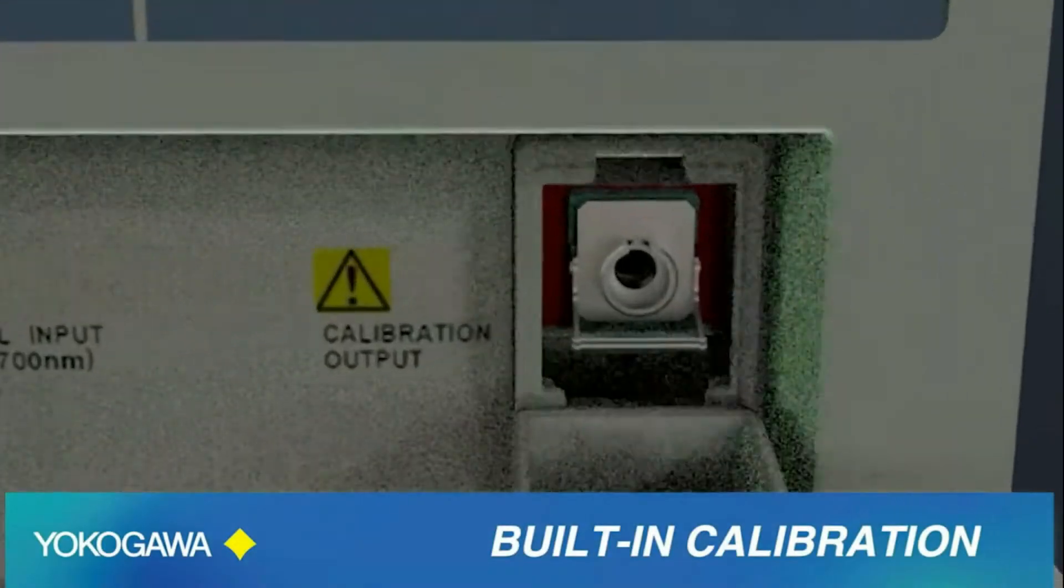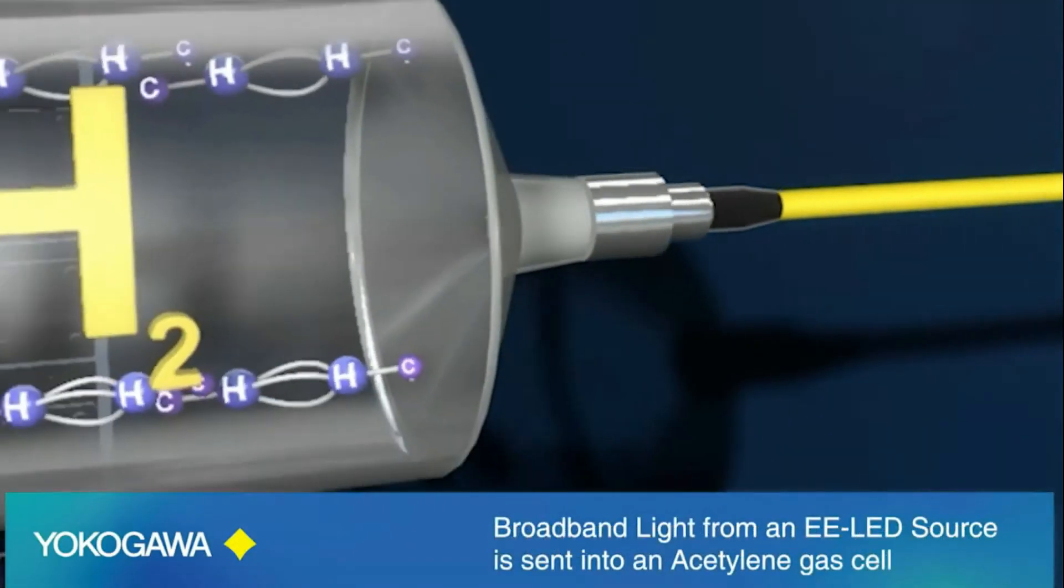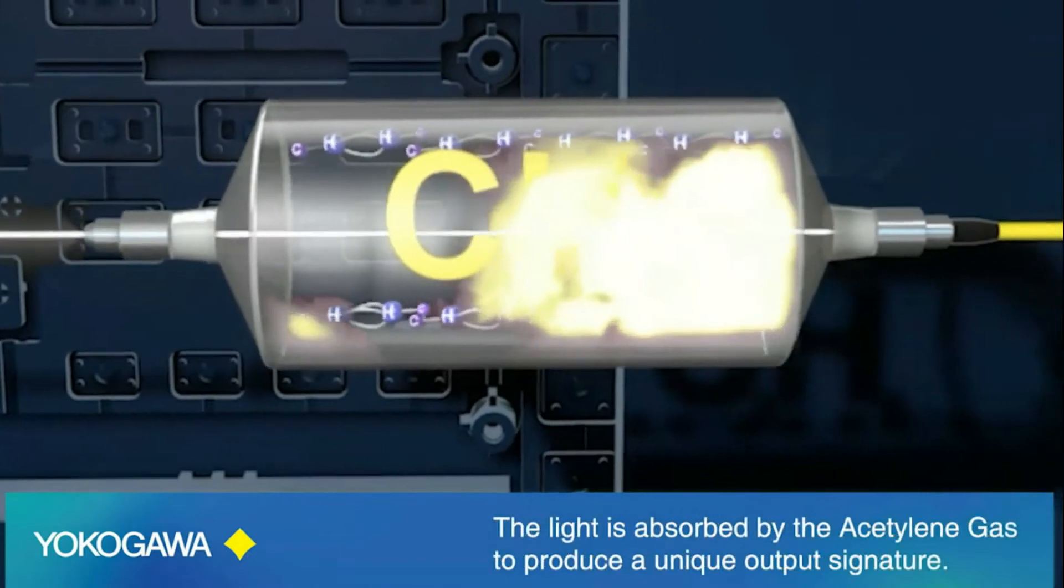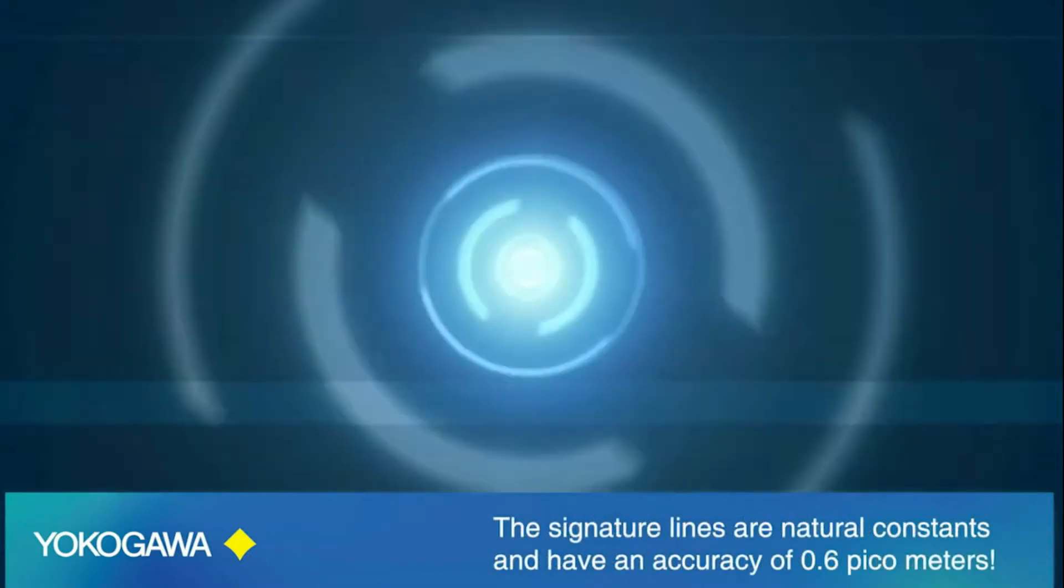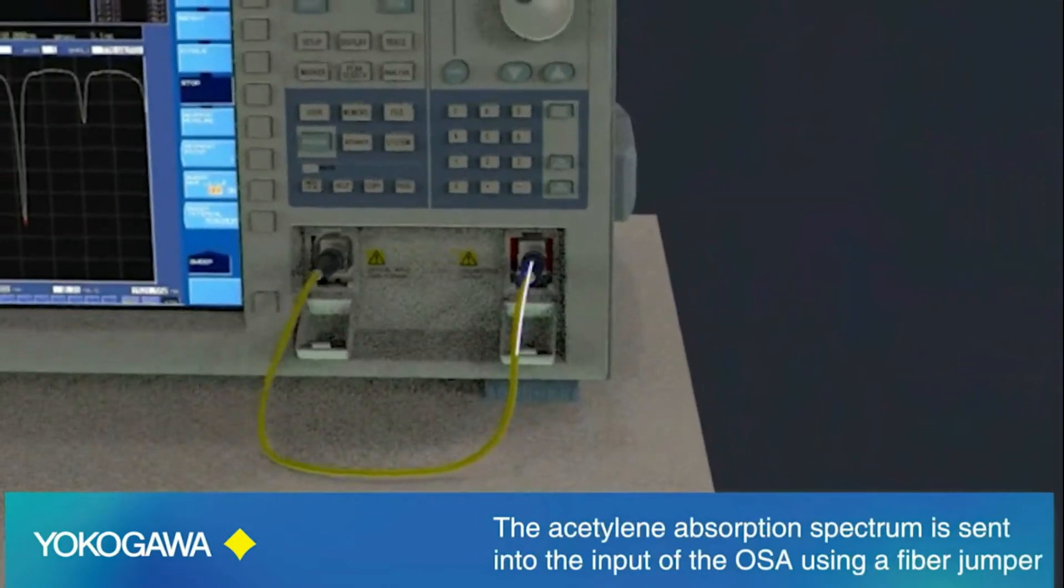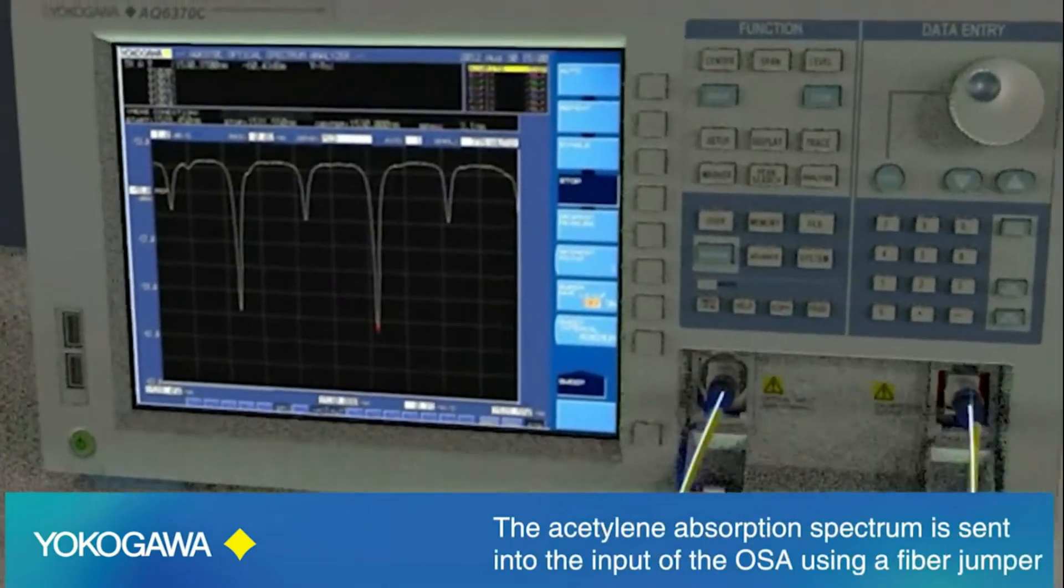In addition, optical spectrum analyzers in the AQ6370 series are supplied with an integrated calibration light source, so the user can ensure measurement accuracy at the start of every test operation.